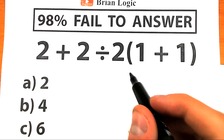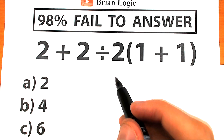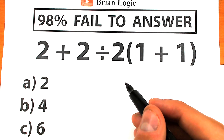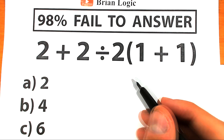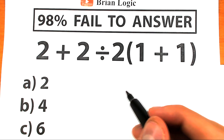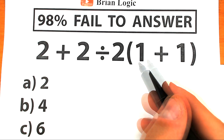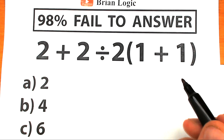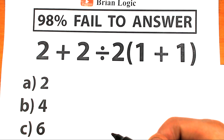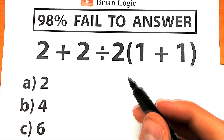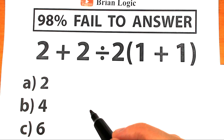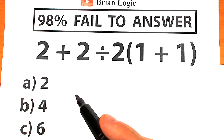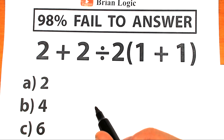Happy to see you here on my channel BrainLogic. We have a really interesting and tricky challenge: 2 plus 2 divided by 2, times the quantity 1 plus 1 inside parentheses. A lot of students might say this is the easiest challenge they've ever seen. Go ahead and put your answer down in the comment section. We have options A, B, and C — choose one and write it down.